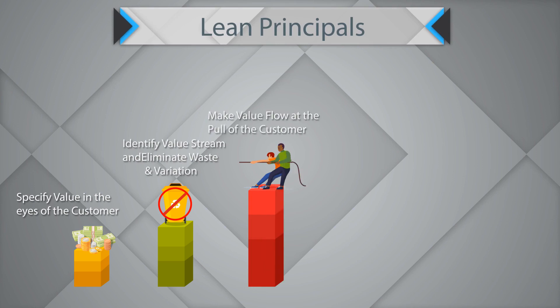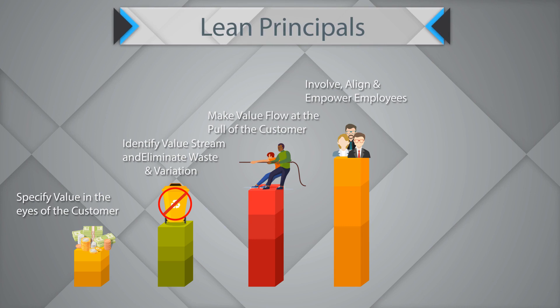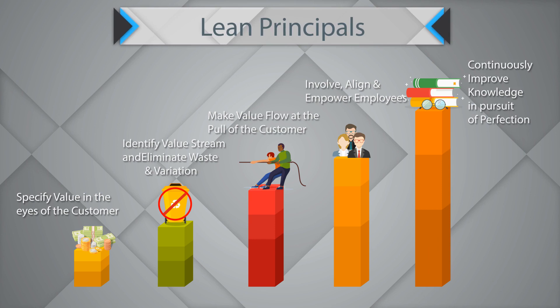The third principle is to make value flow at the pull of the customer. There are two kinds of processes: make to order or make to inventory. Pull is about make to customer order — my process will be triggered by a customer need instead of making to inventory. The fourth, and a very important constituent, is to involve, align and empower your employees. And finally, the fifth is to continuously improve knowledge in the pursuit of perfection.